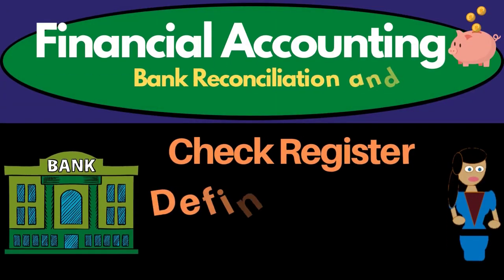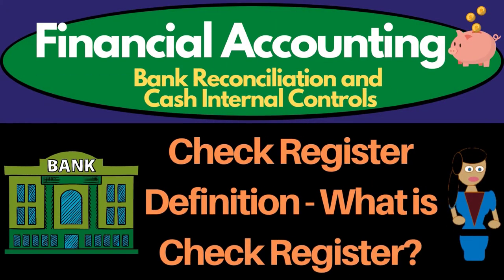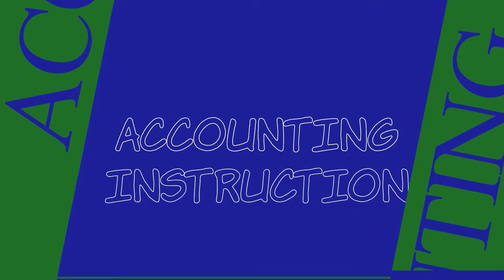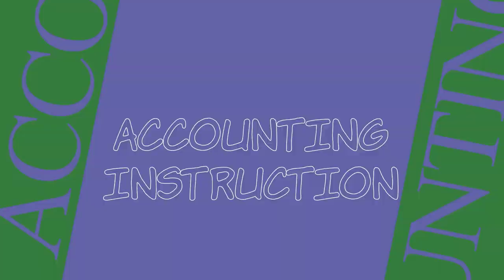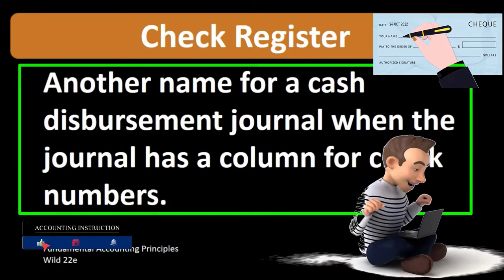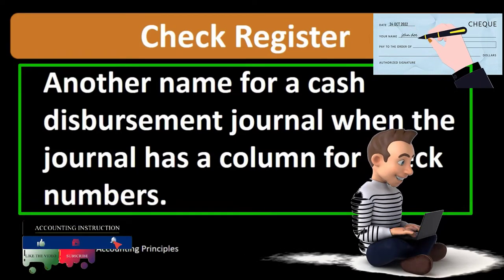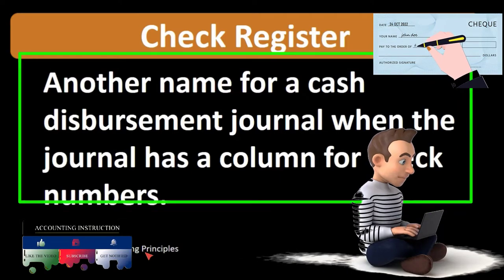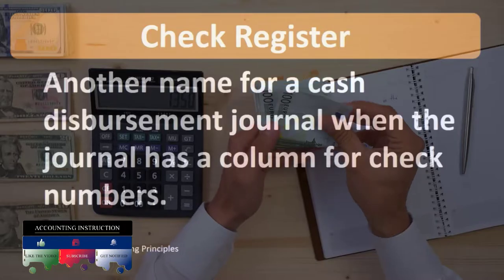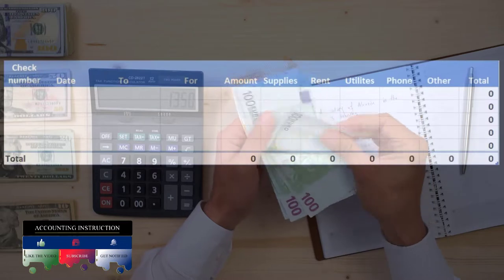Hello, in this lecture we will define check register. According to Fundamental Accounting Principles, 22nd edition, the definition of check register is another name for a cash disbursement journal when the journal has a column for check numbers. So we're talking about those cash disbursements that we will then record in the check register.